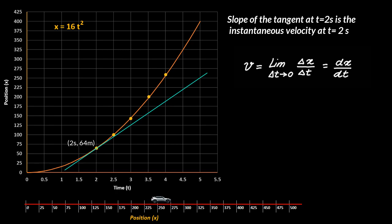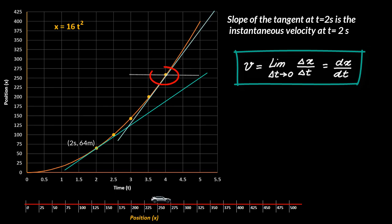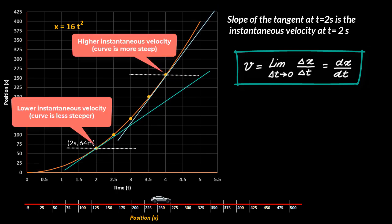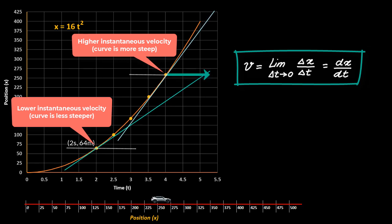The quantity that tells us how fast an object is moving anywhere along its path is the instantaneous velocity, often just called velocity. Since this is a slope at any instant of time, higher the absolute value of slope, more the instantaneous velocity. The slope is higher at one point compared to another, therefore the instantaneous velocity must be more, and we use a longer velocity vector to represent it. The moment you see a steep curve, you should be able to tell that the instantaneous velocity must be higher there.